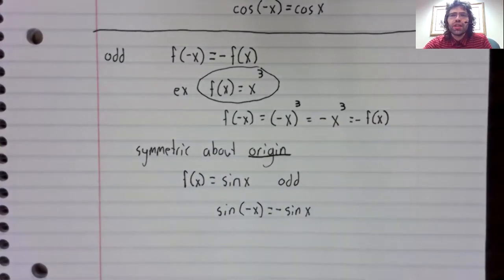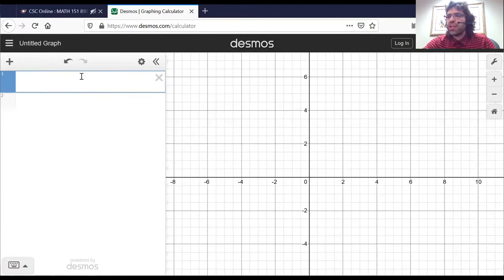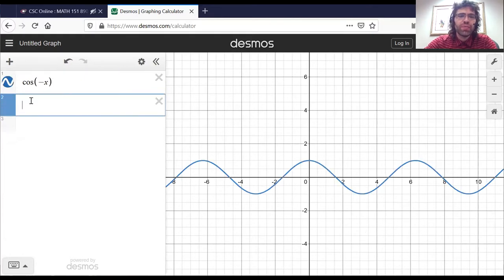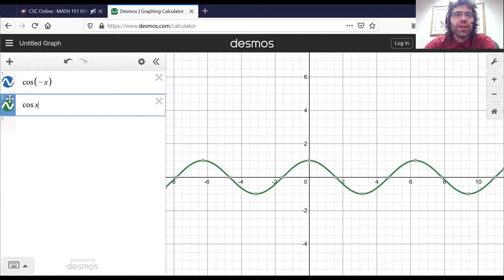And that's real quick, just run back to Desmos. I've stated two equalities. I've said that the cosine of negative x is the cosine of x. And you see here's the cosine of negative x. Here's the cosine of x. Same graph.